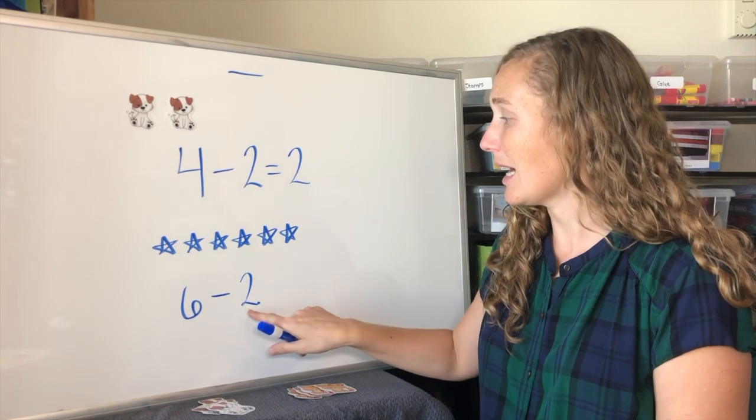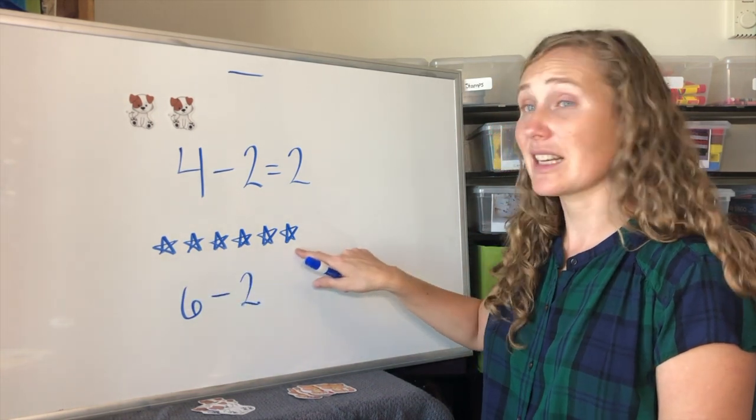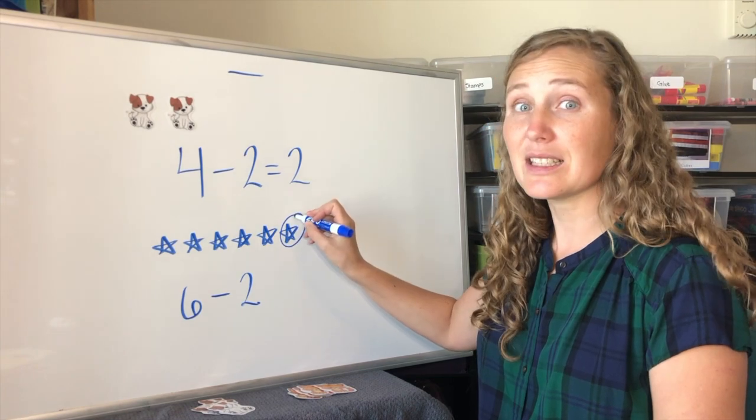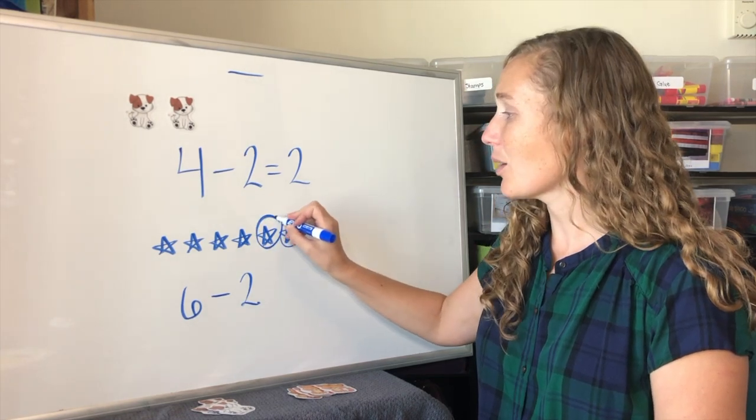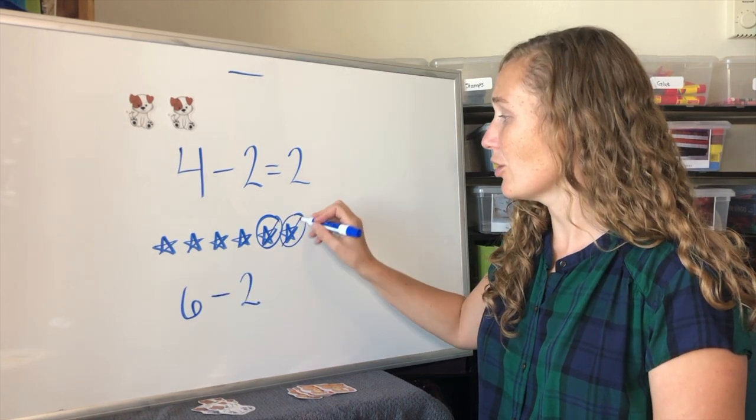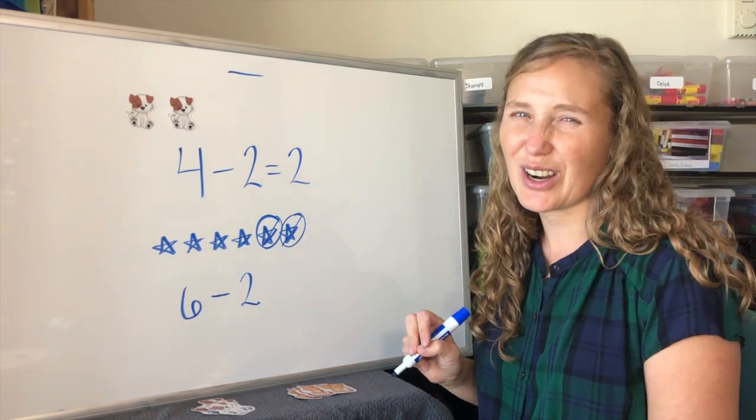Six minus two. Six stars. Six stars. Let's take away two. We can take away this one. And we'll take away this one. Six with two missing. How many stars would be left?